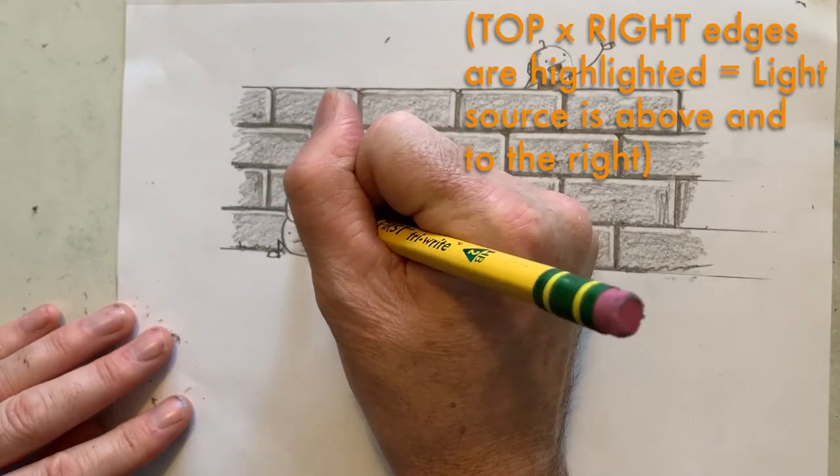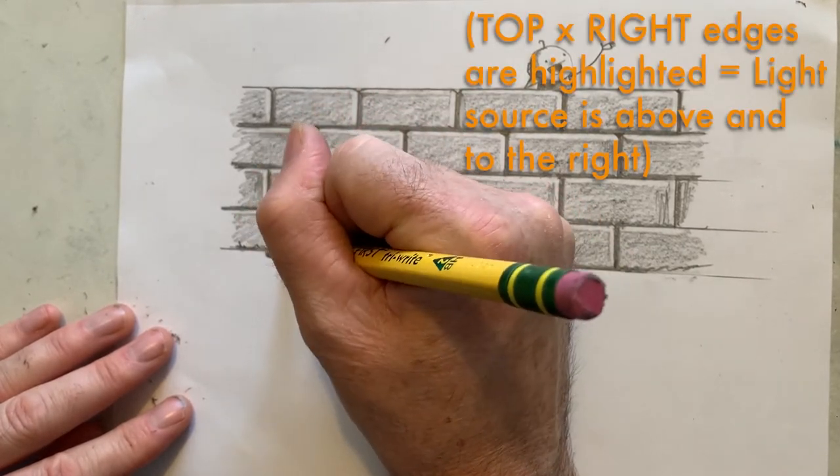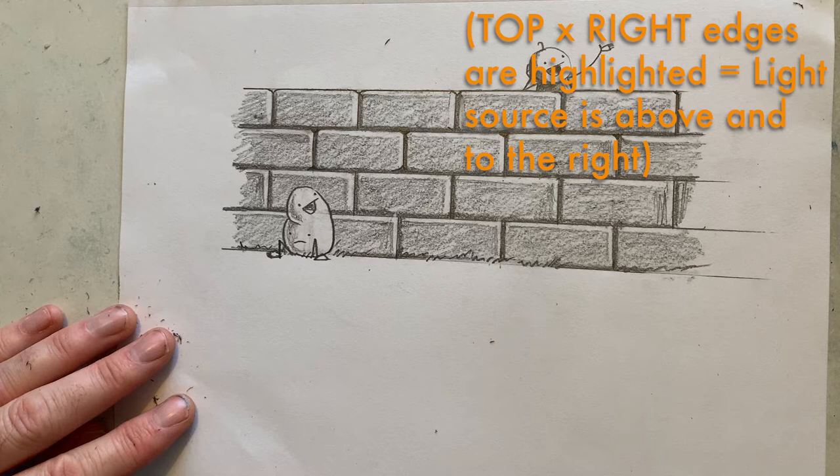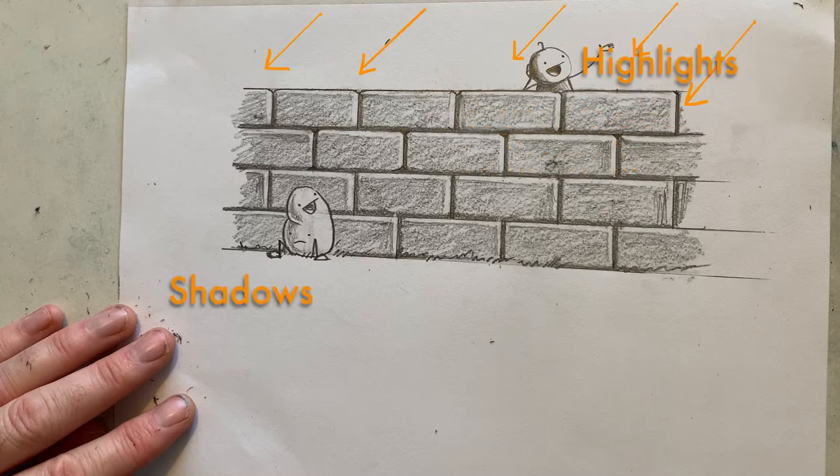And as you add any details, just keep in mind that because we established that the top and right edges of each brick have the highlights, then that suggests that the light is coming from the top right corner.